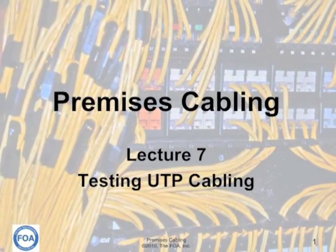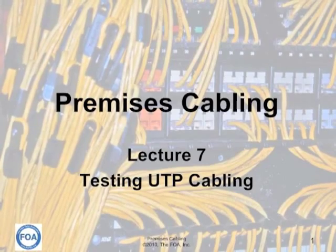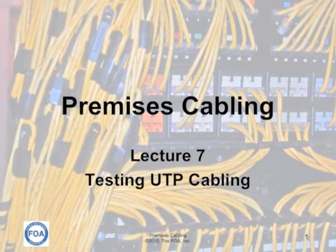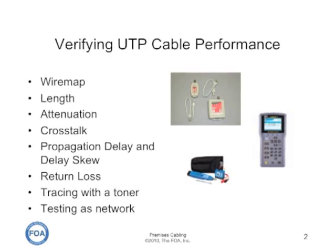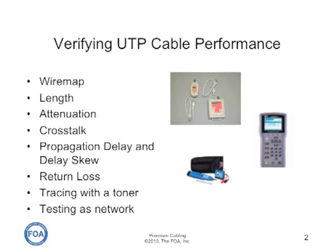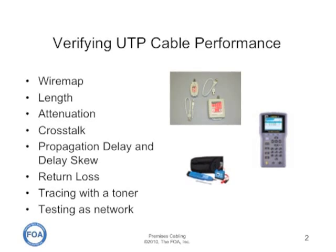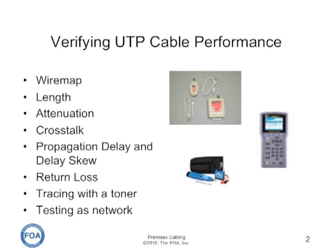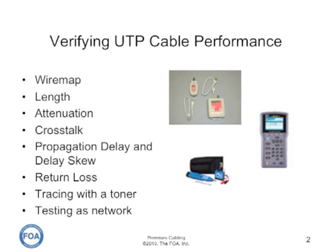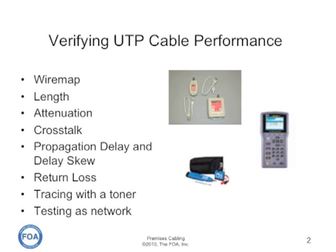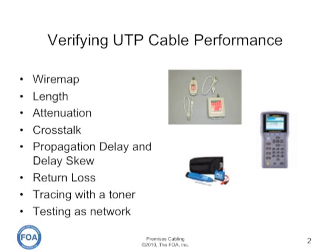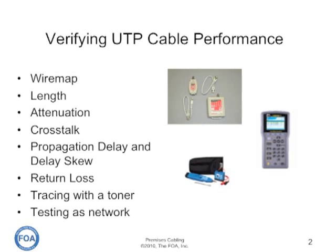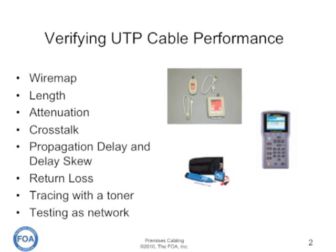This is lecture seven in the FOA series on premises cabling. In this lecture, we'll discuss testing UTP cabling. There are numerous tests that can be made on an installed UTP cable plant. Some of them are quite obvious, like wire mapping to make sure the connections are correct, and the length of the cable to make sure it's within the specified length of the standard. Then there's a whole bunch of performance type specifications that require specialized testing, and a number of testers used to make these tests.